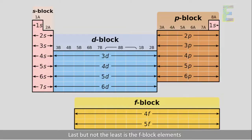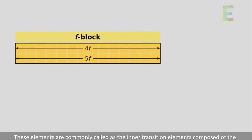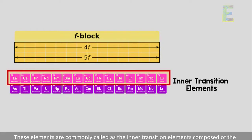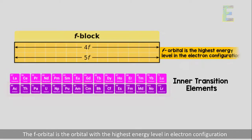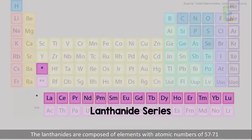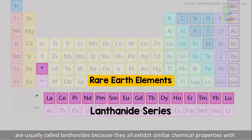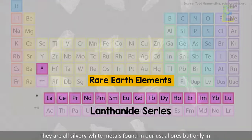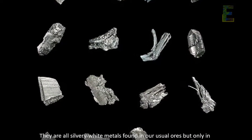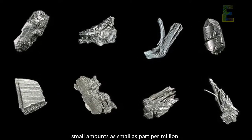Last but not the least is the F block elements, commonly called the inner transition elements, composed of the lanthanide and actinide series. The F orbital is the orbital with the highest energy level in electron configuration. The lanthanides are composed of elements with atomic numbers 57 to 71. These series of metals are often called the rare earth elements, but usually called lanthanides because they all exhibit similar chemical properties with the first element of the group, lanthanum. They are all silvery white metals found in usual ores, but only in small amounts, as small as parts per million.